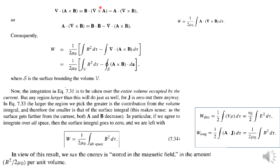Del cross A is again B, so B dot (del cross A) is B dot B, which is B squared. So A dot (del cross B) equals B squared minus del dot (A cross B). Going back and substituting, with the factor 1 over 2 mu zero, the first term gives B squared integrated over volume, and the second term gives del dot (A cross B) integrated over volume.